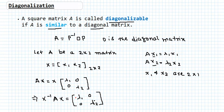This is the method to determine whether a matrix is diagonalizable or not. The important thing in this whole problem is that the matrix X must be an invertible matrix; otherwise we cannot find X inverse. So the matrix X must have an inverse — must be invertible — and then the matrix A is diagonalizable.